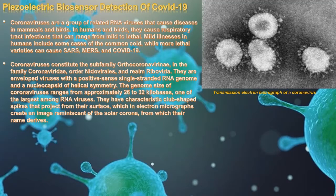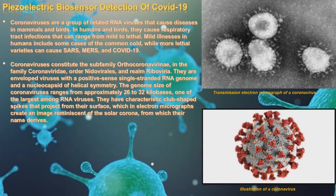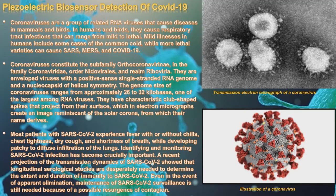Coronaviruses have a characteristic club-shaped spike projecting from the surface, which in electron micrographs creates an image reminiscent of the solar corona, from which the name is derived. Most patients experience fever with or without chills, chest tightness, dry cough, and shortness of breath. Identifying and monitoring SARS-CoV-2 infection has become crucially important; longitudinal serological studies are desperately needed to determine the extent and duration of immunity, and surveillance must continue even after apparent elimination due to possible resurgence.